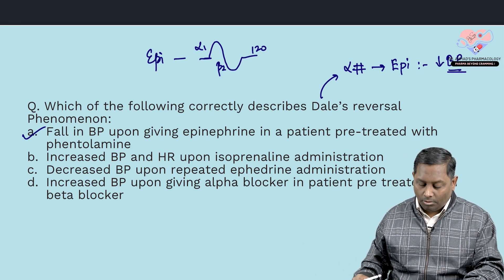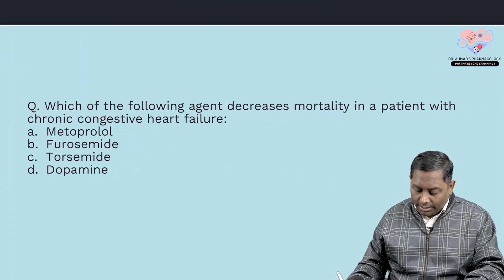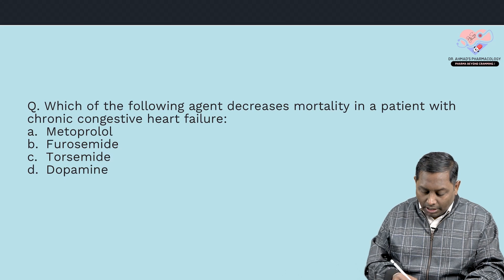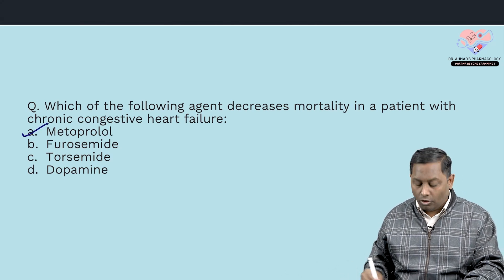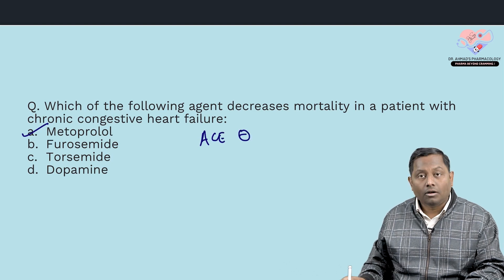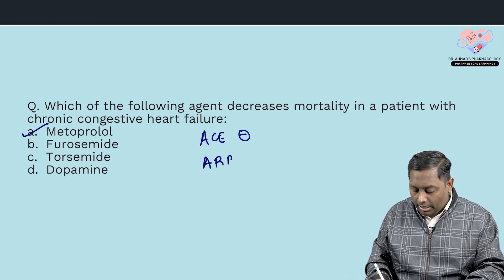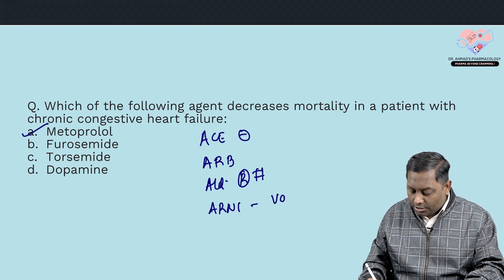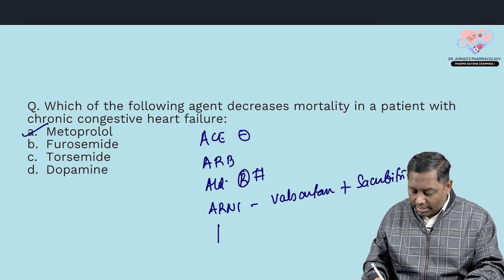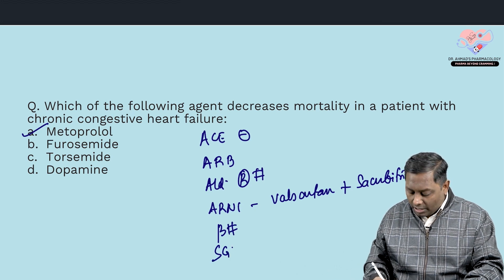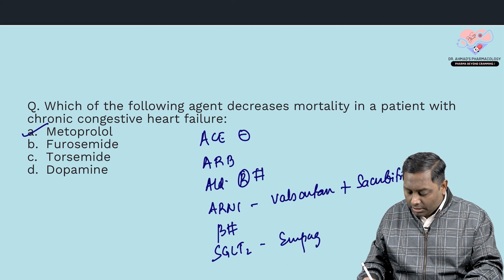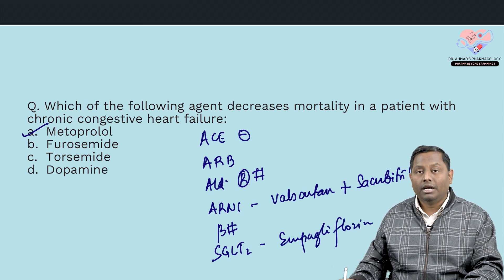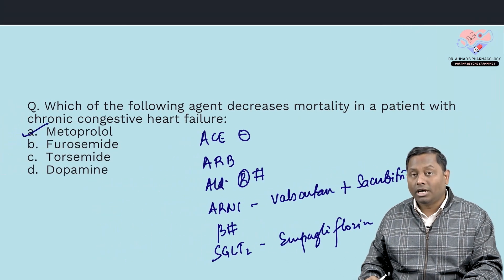Fifth question: which agents decrease mortality in chronic congestive heart failure? Among the choices, only metoprolol applies here. Agents with mortality benefit include: ACE inhibitors (drugs ending in '-pril'), ARBs, aldosterone receptor blockers like spironolactone, ARNI (valsartan + sacubitril), beta-blockers, and SGLT2 inhibitors like empagliflozin. All other agents in the list do not have mortality-related benefit.